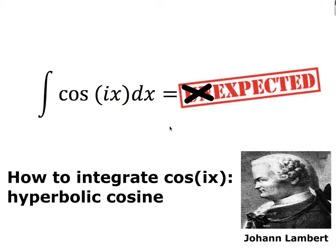This is a short video looking at what happens when we integrate various functions with complex numbers involved. This time we look at what happens when you integrate cos(ix), or the hyperbolic cosine function. This was studied by Johan Lambert, one of the first to look at hyperbolic functions.